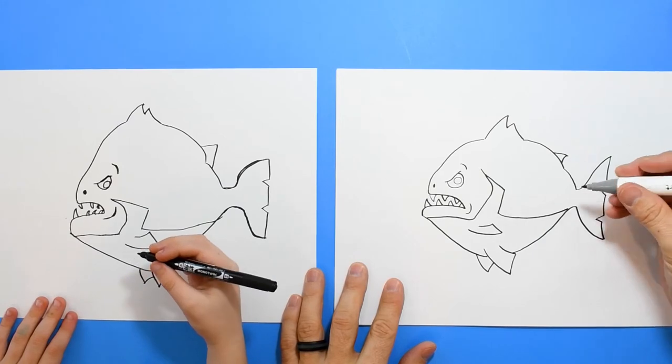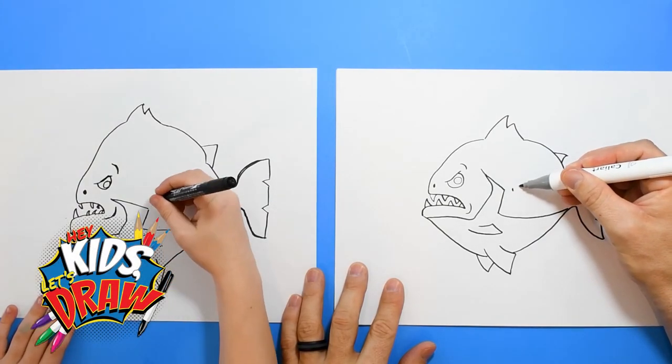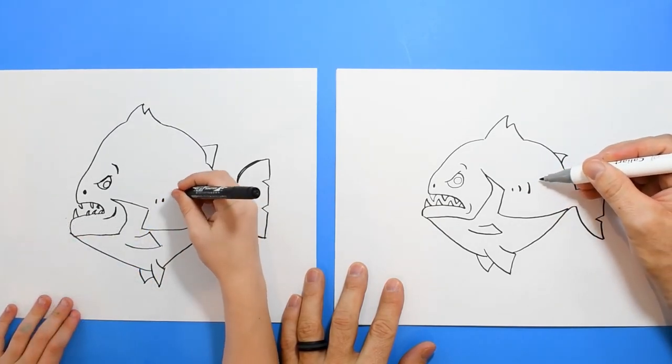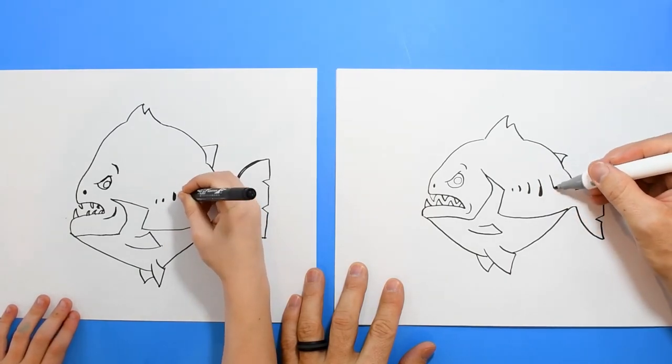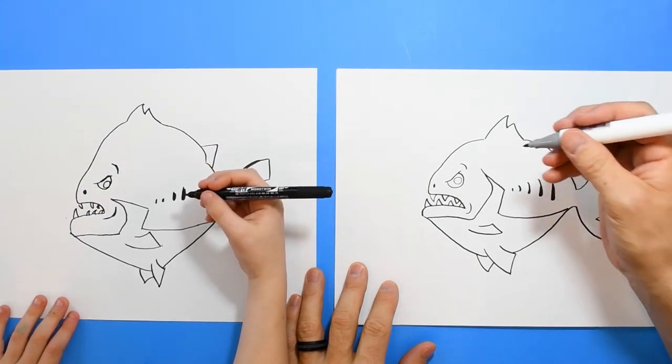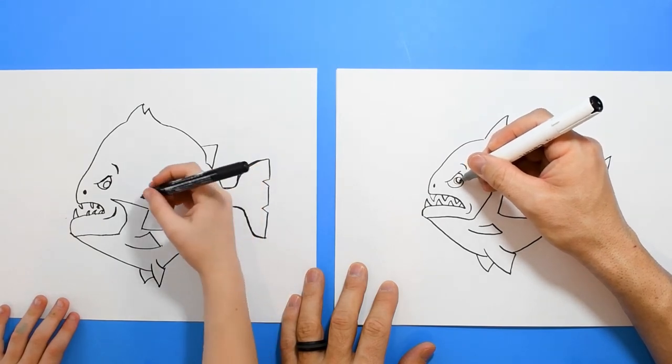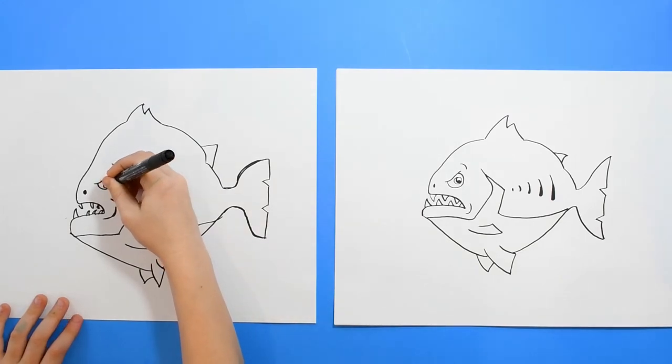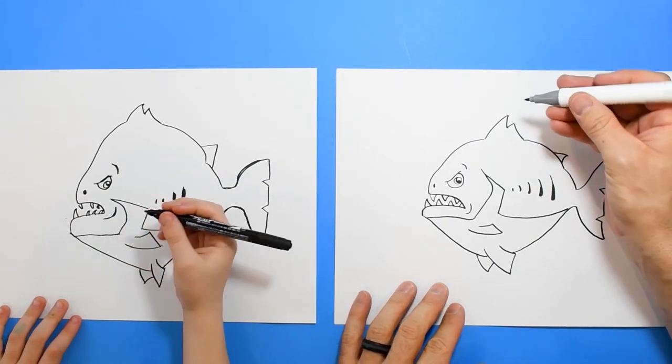And let's do, I don't know, let's do a couple of marks to add some interest. These are kind of like long raindrops. Okay. I'm going to do a circle in the eye and leave the highlight. And then we can start coloring this guy. Good. Yours looks great.